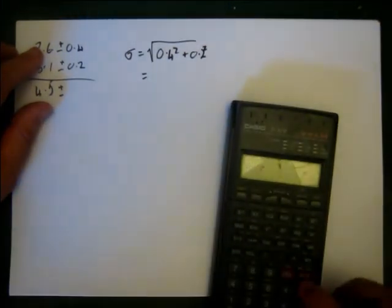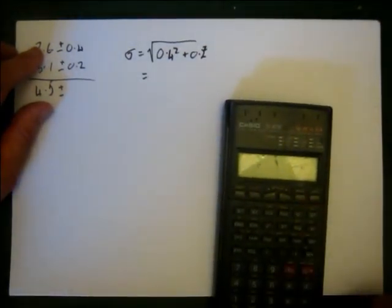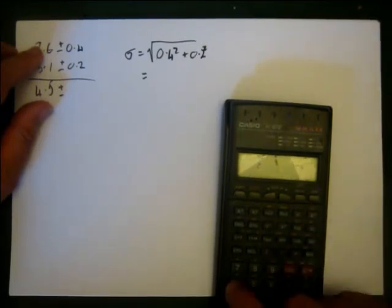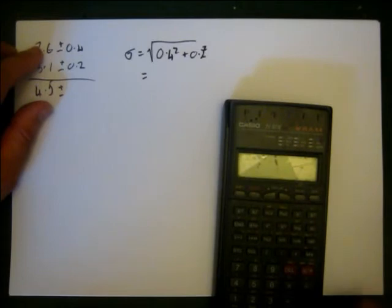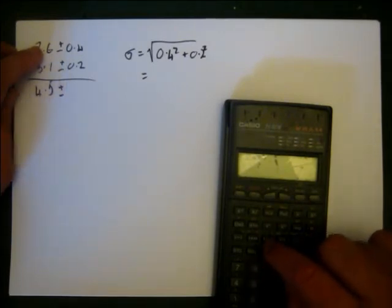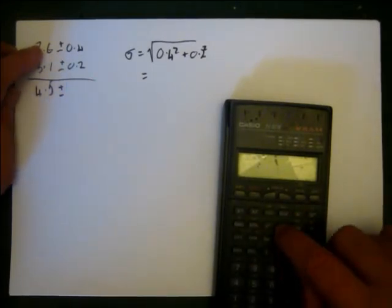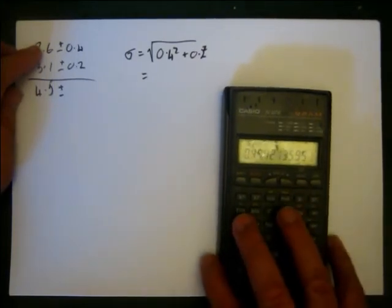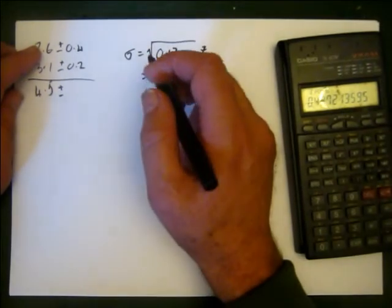And what we do, stick that in the calculator. That's what calculators are made for. So 0.4 squared plus 0.2 squared equals, take the square root of that lot, equals 0.447.